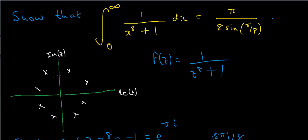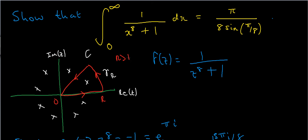Let me show you what I mean. Instead of a semicircle, I'm going to start at the origin, go along the positive real axis to the point R, then go around the arc past this first pole, stop halfway between the first two poles, and then go back toward the origin to complete the closed contour. I'll call this whole contour C, and the arc portion gamma sub R.